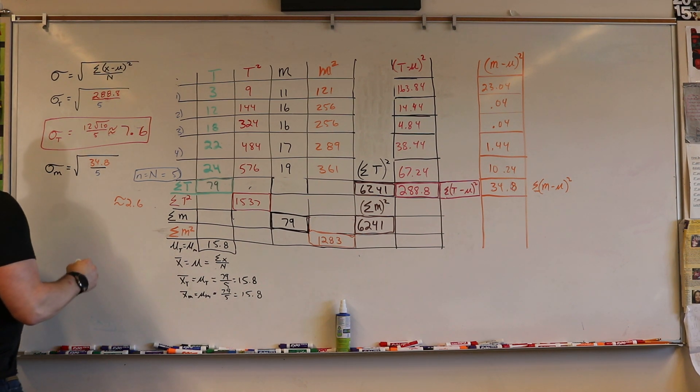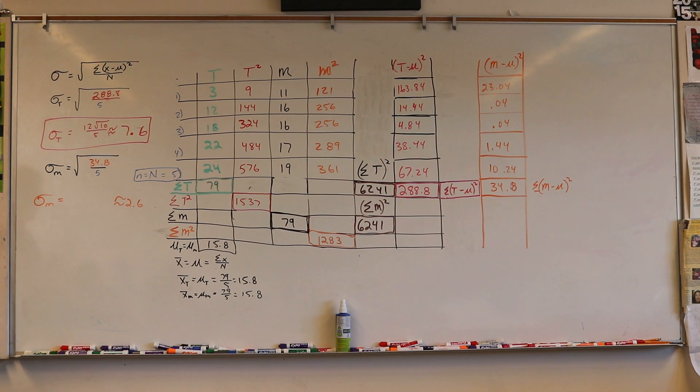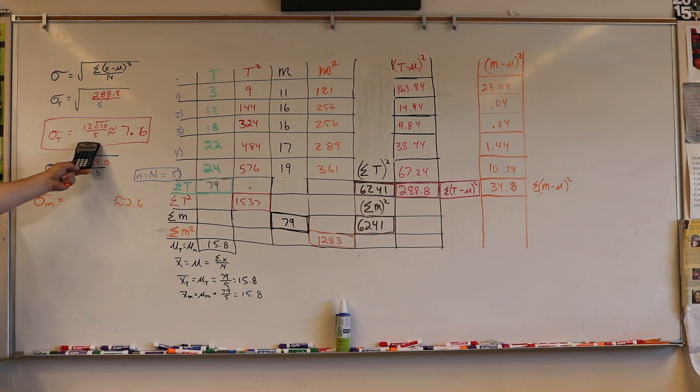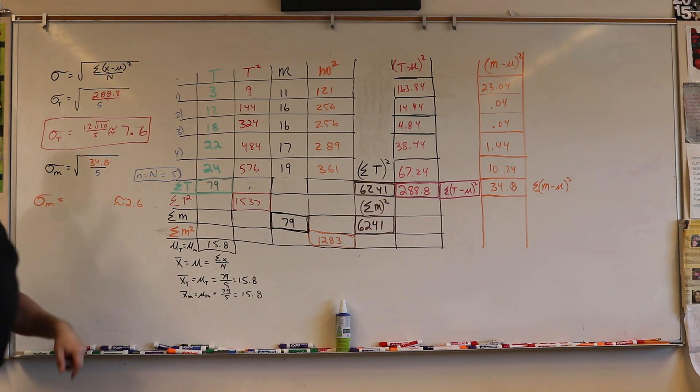So my population standard deviation is 2.6, much smaller than Taylor's, which it should be. But let's also take a look at how I did this. I showed you last time when it wasn't on film, but I'm going to show you now on film.